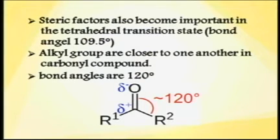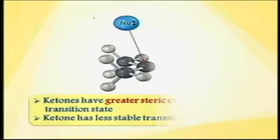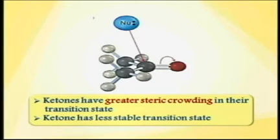The bond angle in tetrahedral carbon is 109.5 degrees. The carbonyl carbon bond angle is 120 degrees. When aldehydes undergo reaction to tetrahedral intermediate, there is steric crowding. Aldehydes are therefore more reactive.